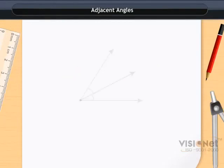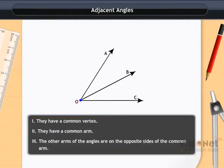Conditions for adjacent angles are: they have a common vertex, they have a common arm, and the non-common arms are on either side of the common arm.